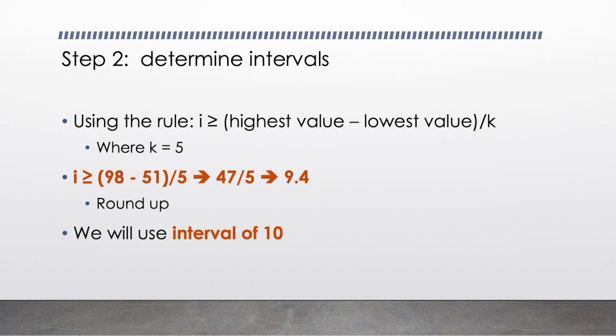So looking at my data set, the highest number of oil changes completed was 98. We had another day where we had the lowest number of oil changes at 51. So our equation is 98 minus 51 divided by 5. We get 47 divided by 5 or 9.4. Make sure when you're setting your intervals that you round to a whole and easier number. The text suggests doing something that's a multiple of 10 or 100. So since our answer was 9.4, we're going to round that up to 10 and use an interval of 10.